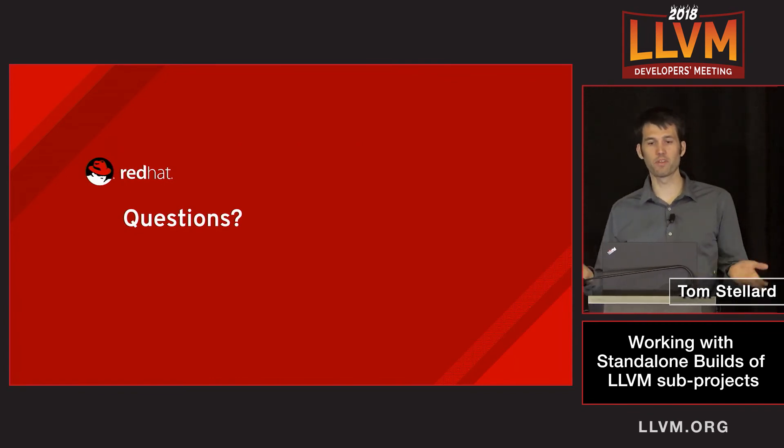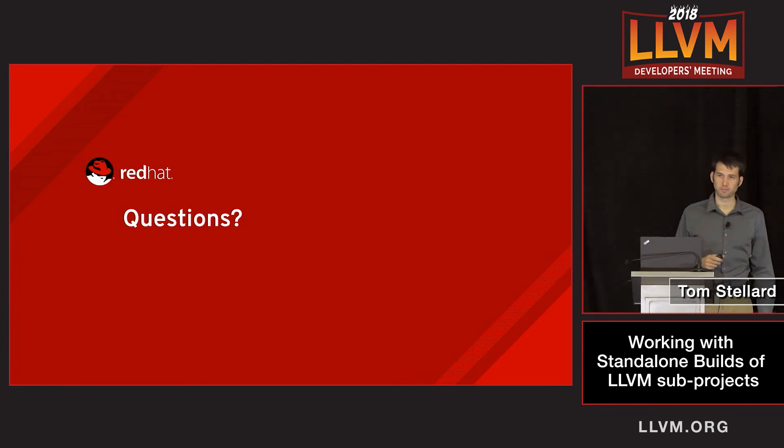That's pretty much all I have on the topic. I hope this is something you'll find useful. Thanks for listening. [Audience question: What triggers the complete build — when you build the RPMs, what triggers the complete build?] In Fedora, it's all manual right now. If I want to build LLVM, I just manually submit the build and it builds.